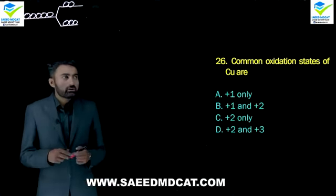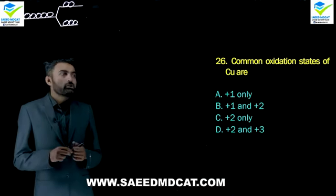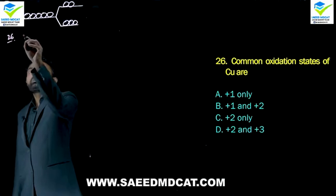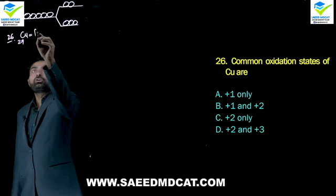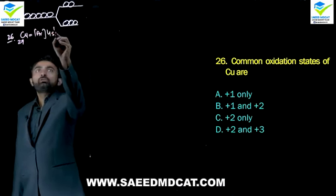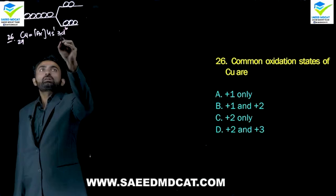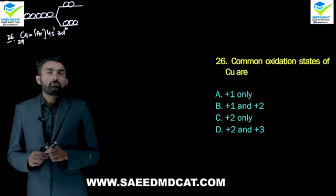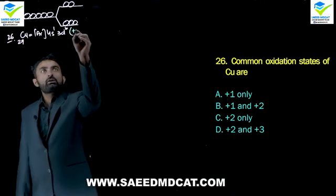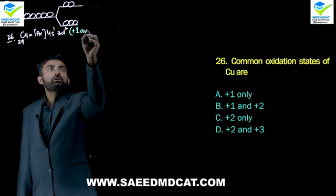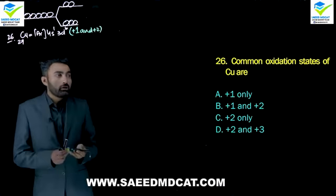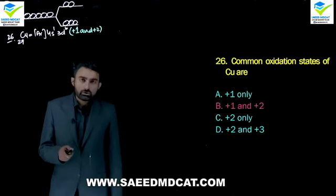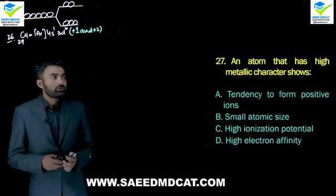Question 26: Common oxidation states of copper are what? Copper (atomic number 29) has anomalous configuration [Ar] 4s1 3d10. It appears it should only show +1, since s has one electron and d has no unpaired electrons. However, experimentally copper shows both +1 and +2 oxidation states. This +2 is anomalous behavior. Beta option: +1 and +2.